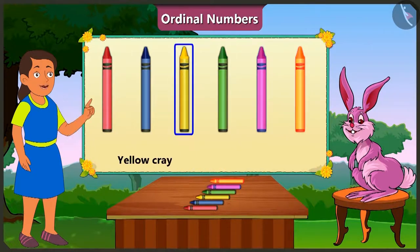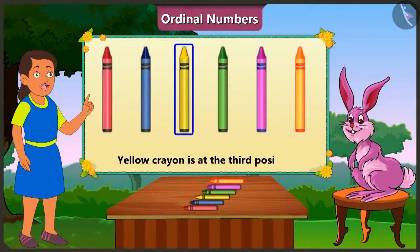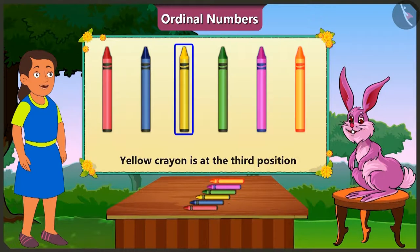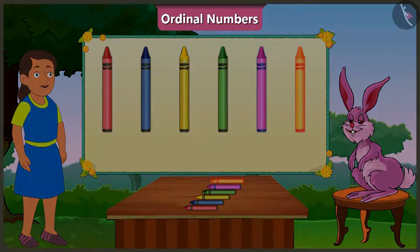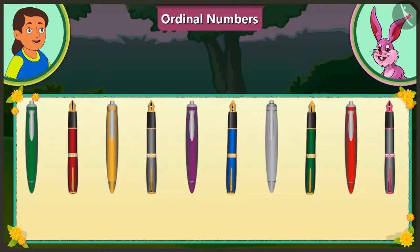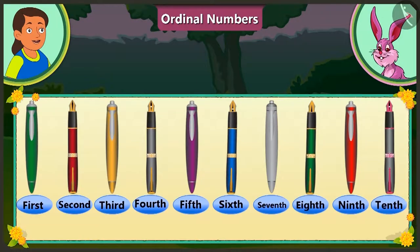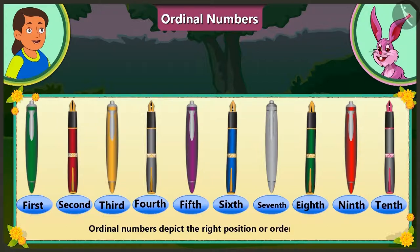So here the yellow crayon is at the third position, and at the end is the orange crayon. Absolutely right, Bubbly! Ordinal numbers depict the right position or order of anything.